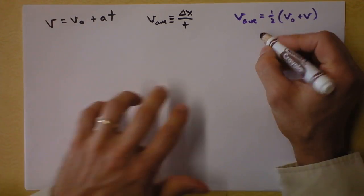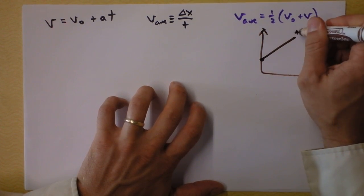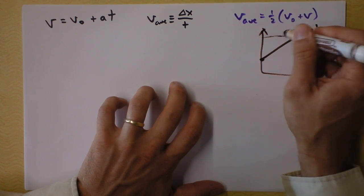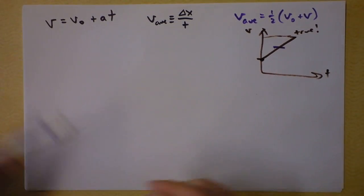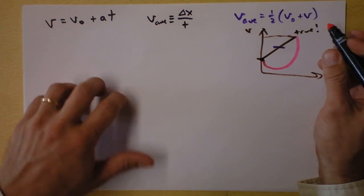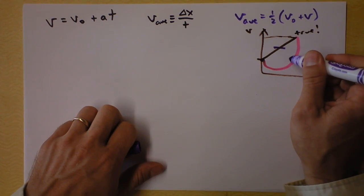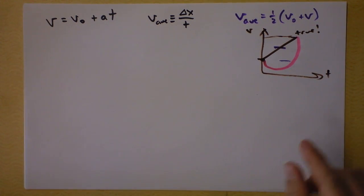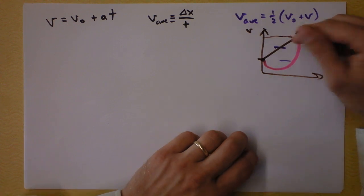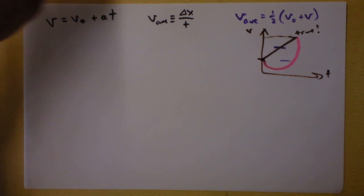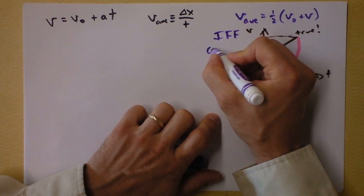Let me draw you a little sketch to show you why it's not always true. The average velocity would be one-half initial plus final if, for instance, the velocity were doing something like a straight line. Then it would be true, because we'd take the final velocity and the initial velocity, and the average is right in the middle of the two. But it's not true in the case of a wonky velocity, because the average of that velocity as a function of time is probably going to be somewhere else entirely. The difference between the two lines is that one has a constant slope. A constant slope on a velocity versus time graph means constant acceleration. So this equation is true if and only if we have constant acceleration.